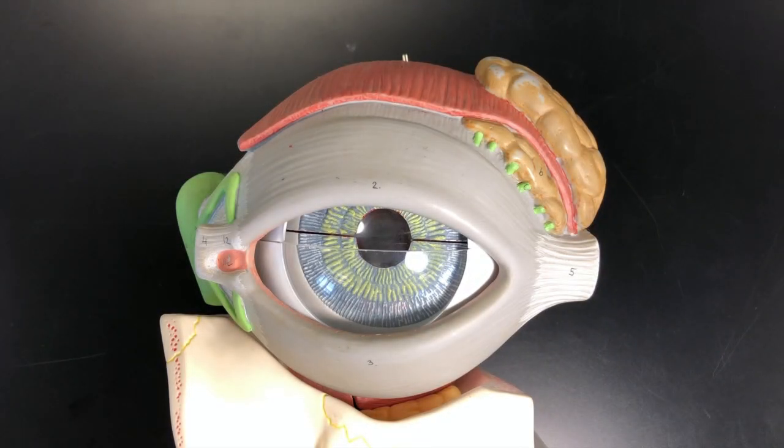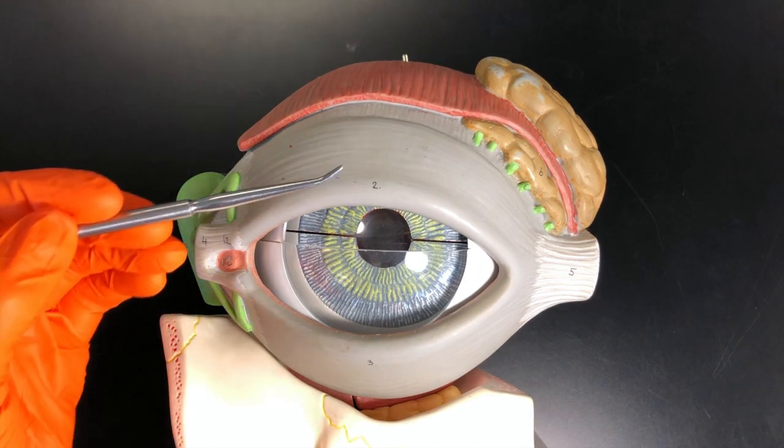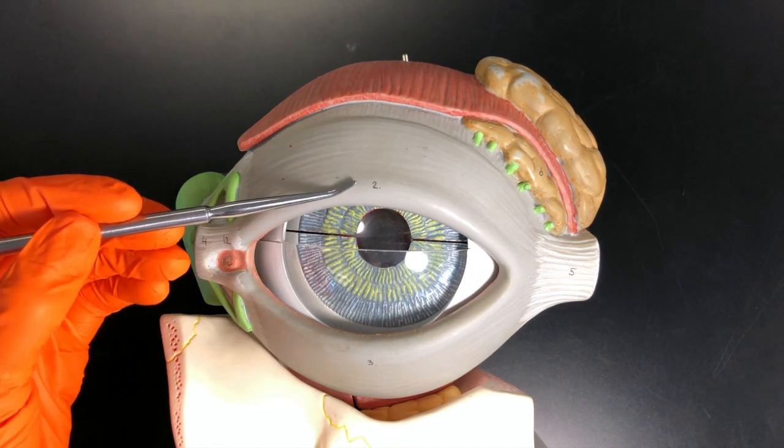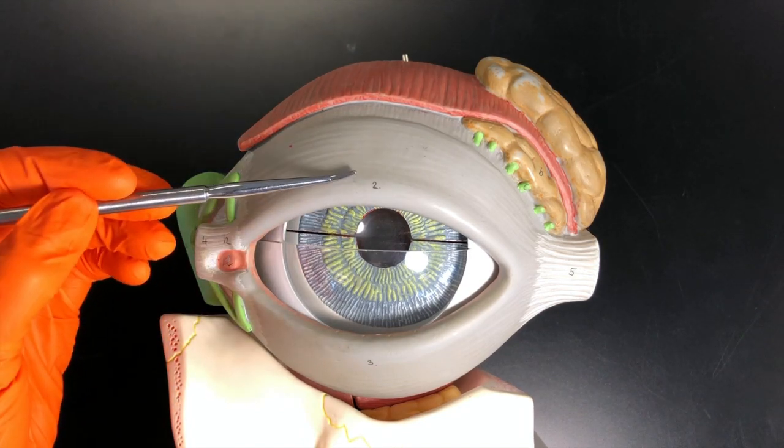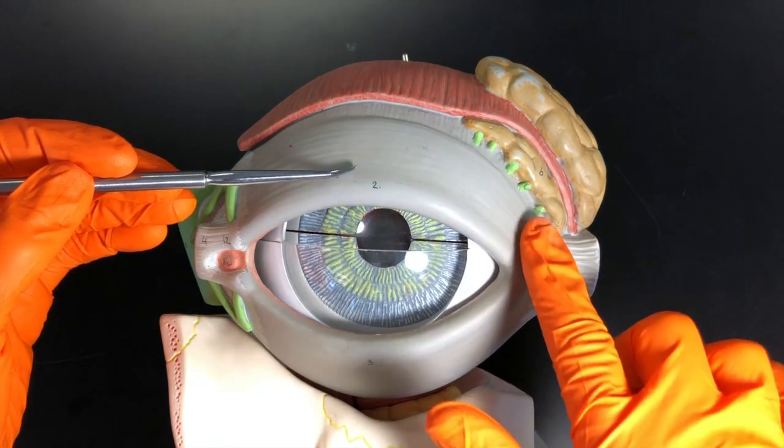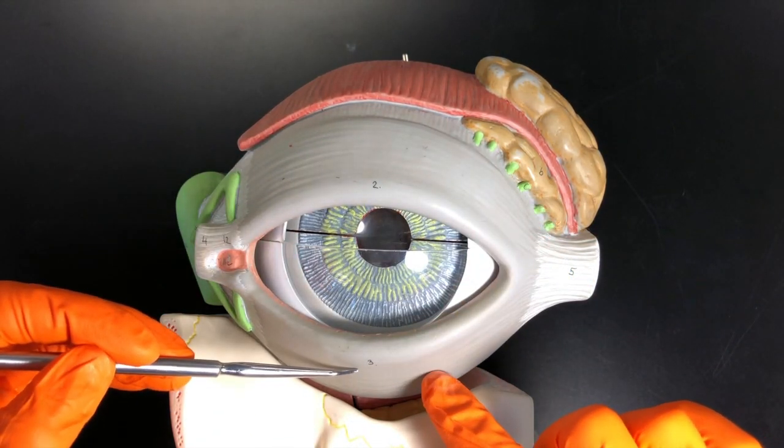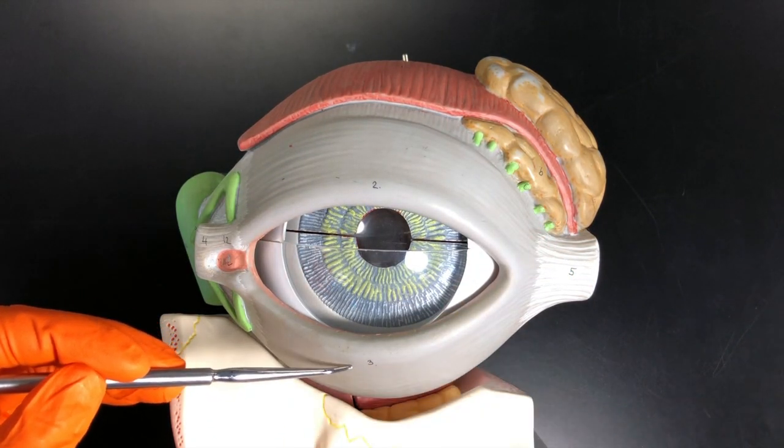Alright, let's start with some external structures of the eye. First, we have the eyelids, which are called palpebrae. We have a superior palpebra, which is the upper eyelid, and then the lower eyelid would be the inferior palpebra.